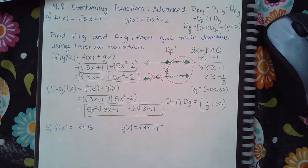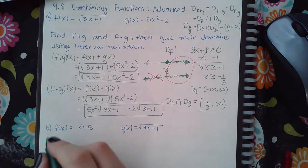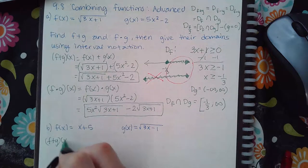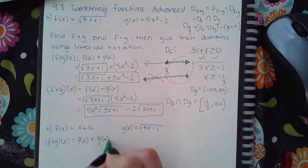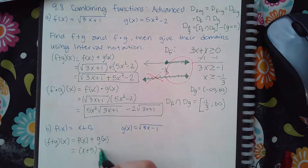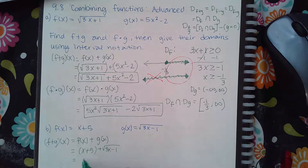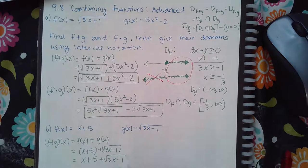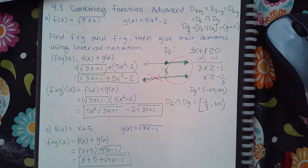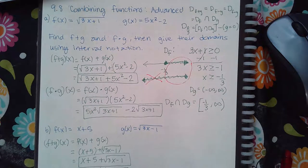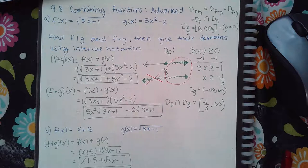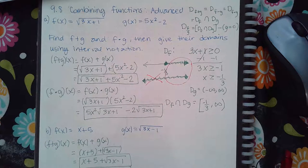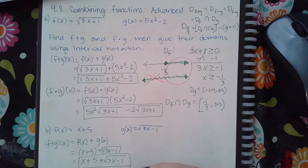Now for the next example with two new functions, we do the exact same thing. For f plus g, that is f of x plus g of x, which gives x plus 5 plus the square root of 3x minus 1. You don't need parentheses here and there are no like terms, so that is the expression for f plus g. For f times g, we get x plus 5 times the square root of 3x minus 1, and distributing gives x times the square root of 3x minus 1 plus 5 times the square root of 3x minus 1.